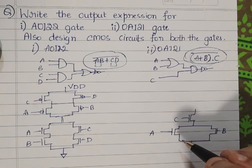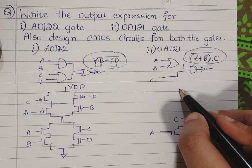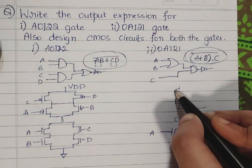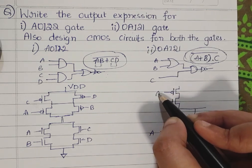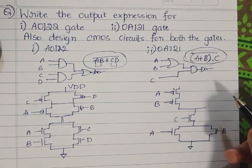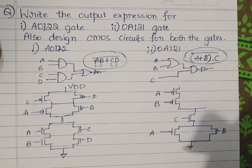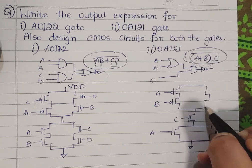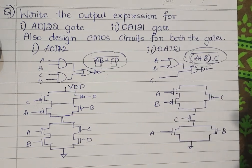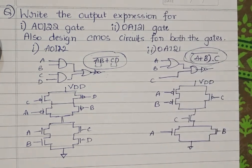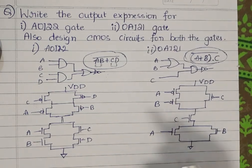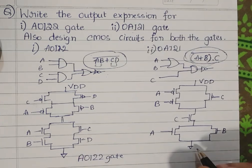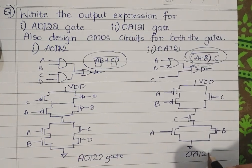Considering the PMOS structure — in the PMOS structure, A and B are in series, and C is in parallel with the series combination of A and B. This is how we draw the CMOS structure for the given OAI gate.